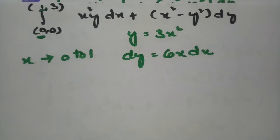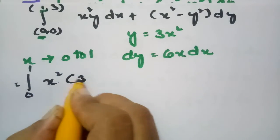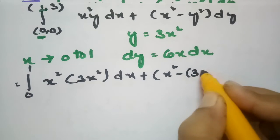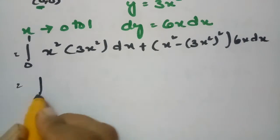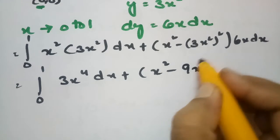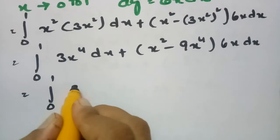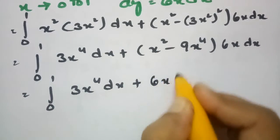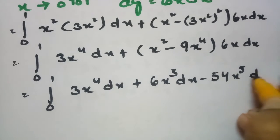Substituting y equals 3x² and dy equals 6x dx, the integral from 0 to 1 becomes: 3x² times 3x² dx plus (x² minus (3x²)²) times 6x dx. This simplifies to 3x⁴ dx plus (x² minus 9x⁴) times 6x dx, giving 3x⁴ dx plus 6x³ dx minus 54x⁵ dx.